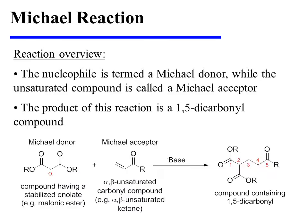The nucleophile is termed a Michael donor — remember that the nucleophile is the compound that can form a stabilized enolate. The unsaturated compound is called a Michael acceptor, and the product of this reaction is a 1,5-dicarbonyl compound.